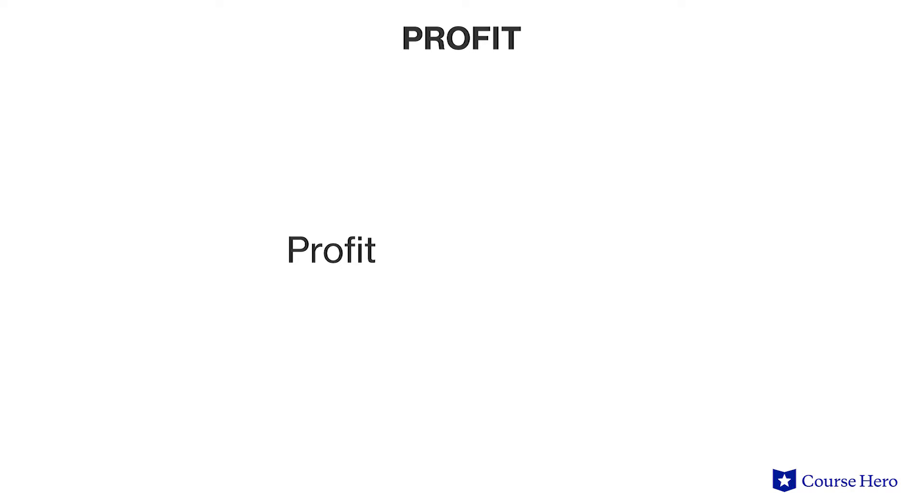In mathematical terms, profit can also be written as total revenue minus total cost. The two formulas are mathematically equivalent, but one focuses on knowing the per unit profit and the other focuses on looking only at totals. In the example of the furniture manufacturer, the profit would equal the total money earned by selling the furniture minus the total amount spent on wood and salaries.